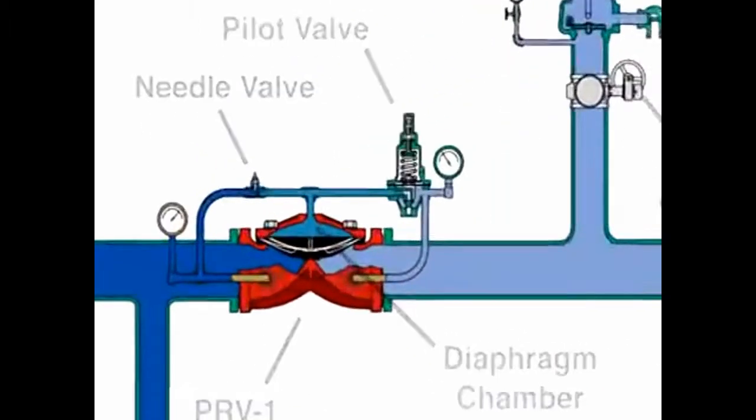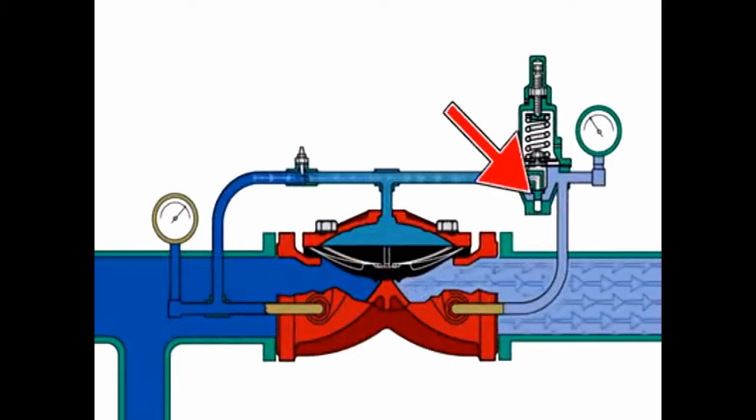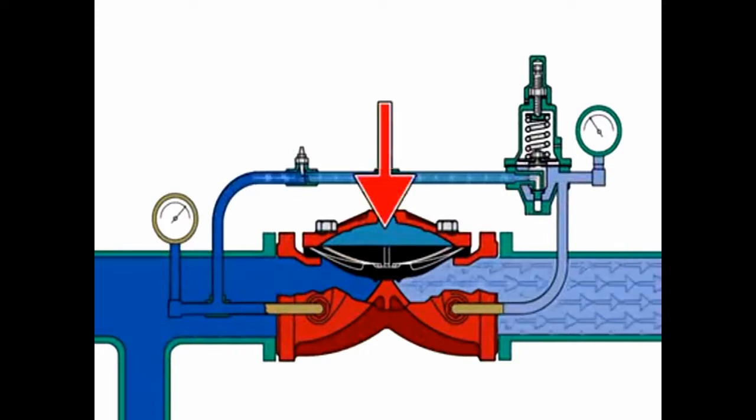When there is no flow demand downstream, the PRV1 seat is closed and the pilot valve seat is closed. With the pilot valve seat closed, pressure is trapped in the diaphragm chamber, which keeps the diaphragm closed on the PRV1 seat.